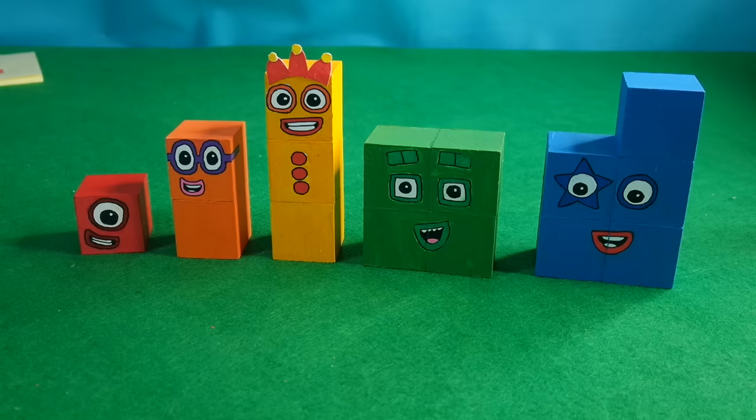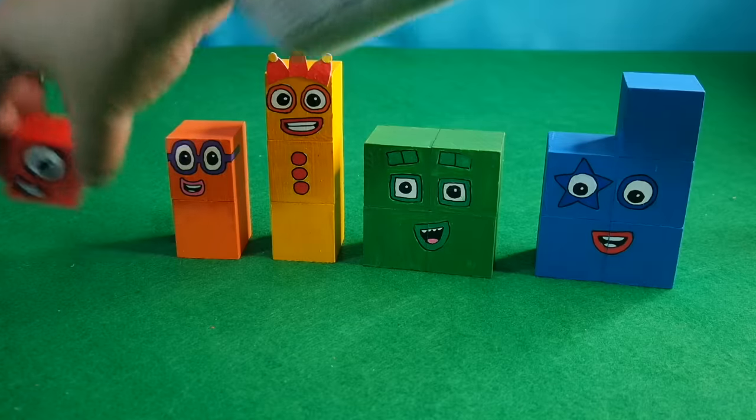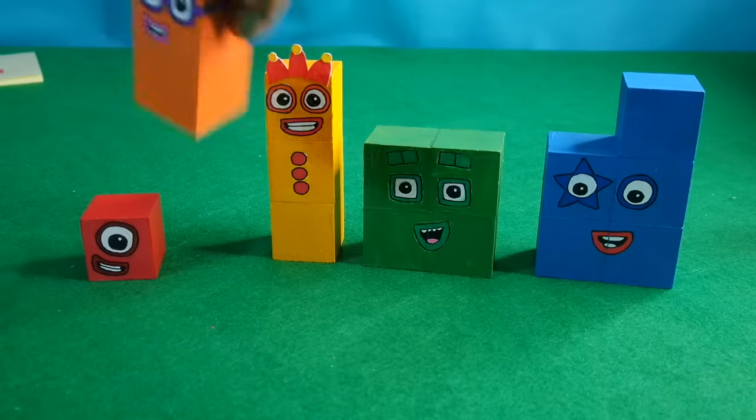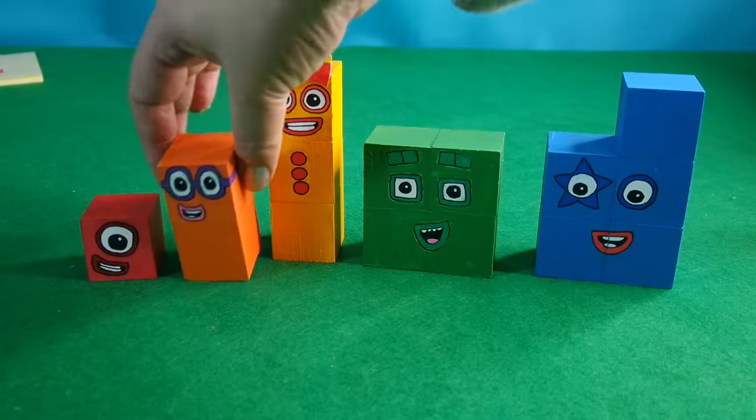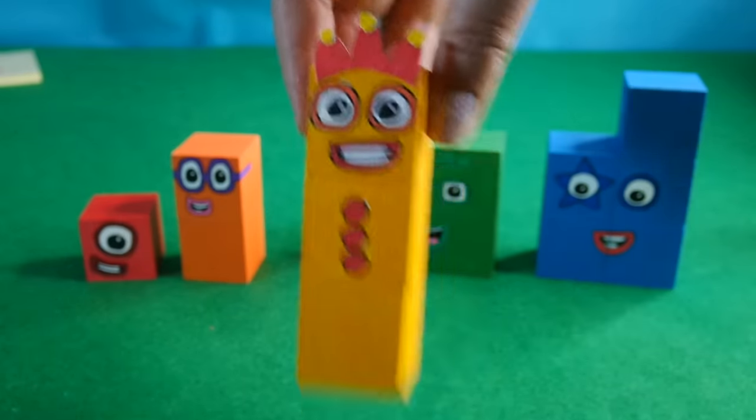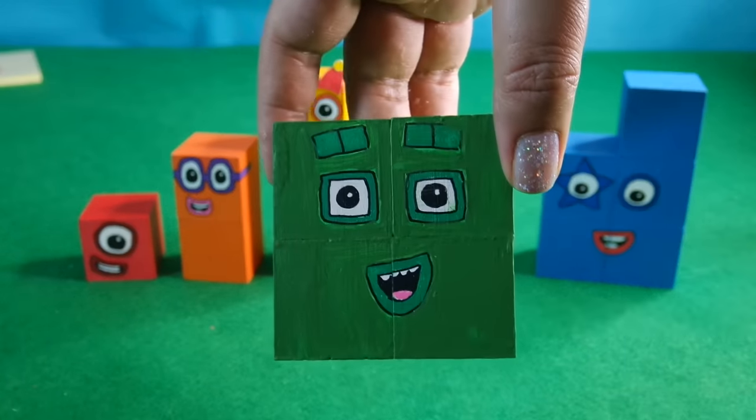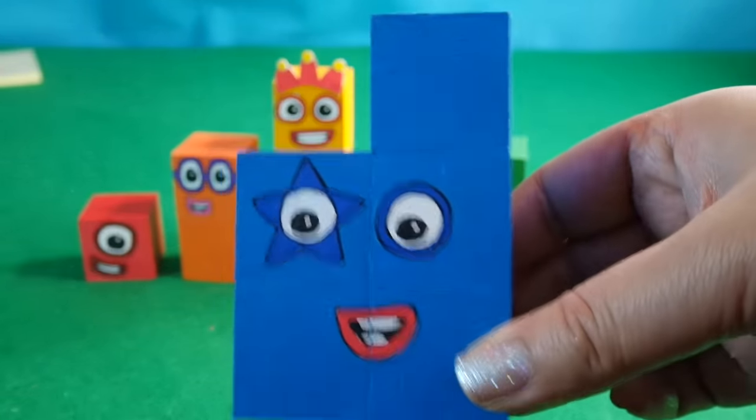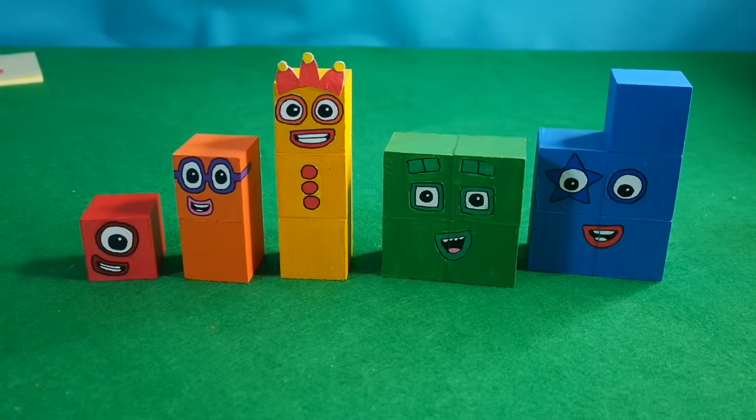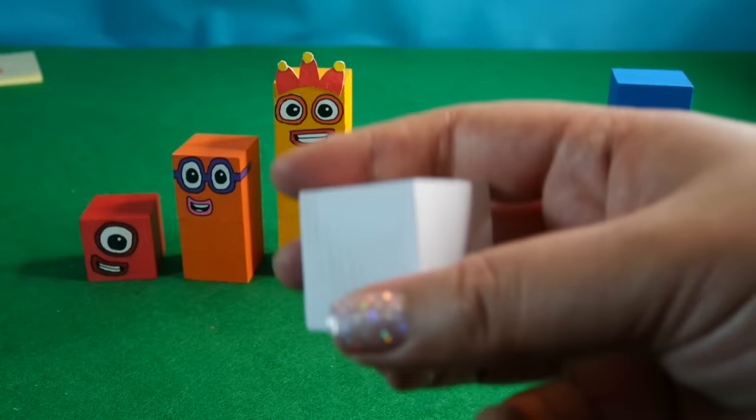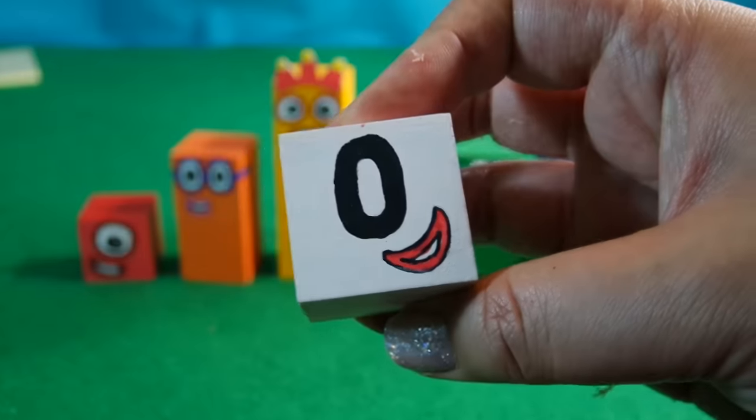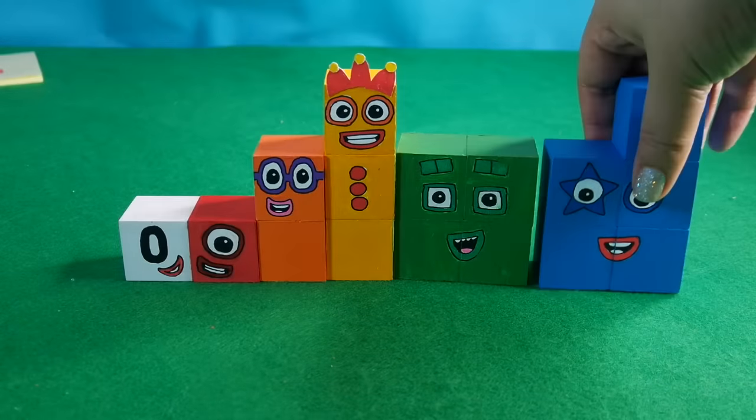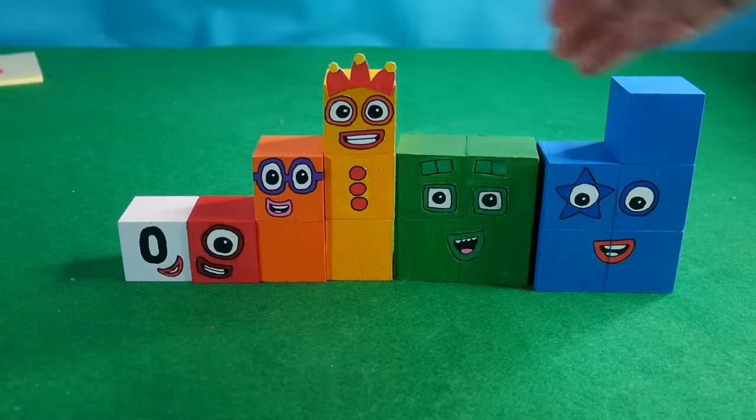Okay guys, here are our finished Number Blocks wooden pieces that I painted. Here is Number 1, very handsome, and Number 2. Number 3 with his crown, Number 4 with a smiley face, and Number 5. And did you guess who our special Number Block is? I'll give you a clue. Are you ready? Zero! So we've got 0, 1, 2, 3, 4, and 5.